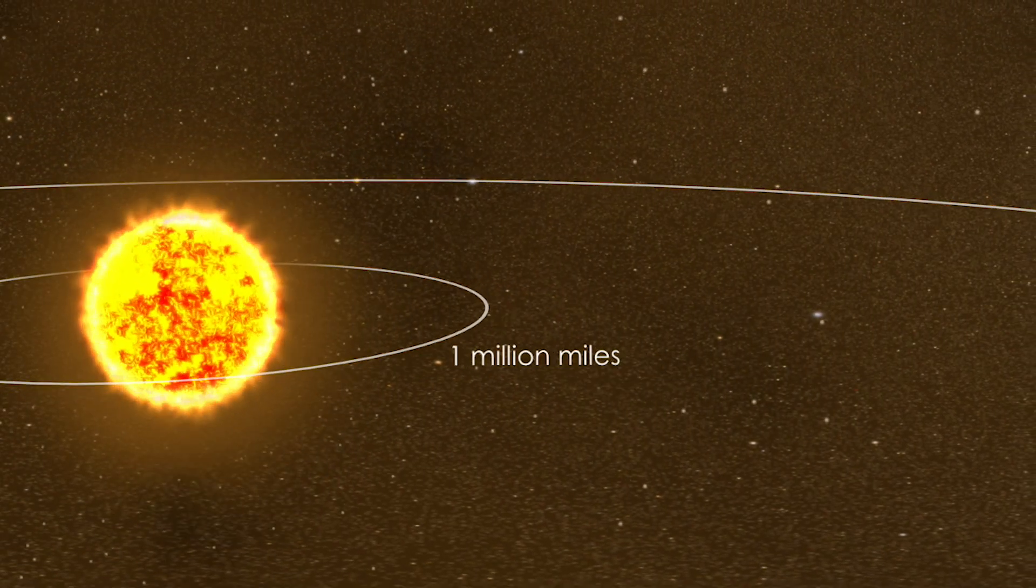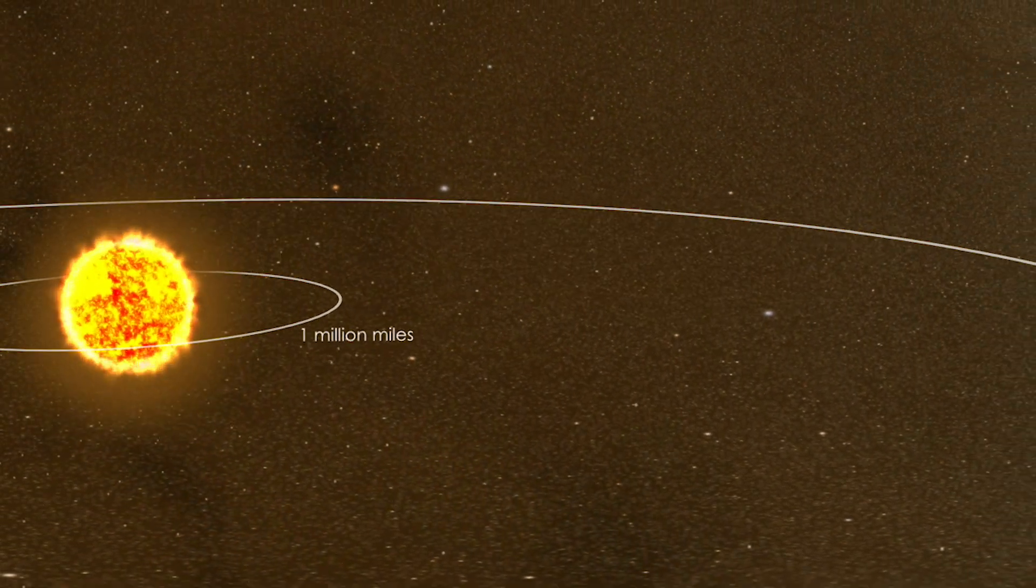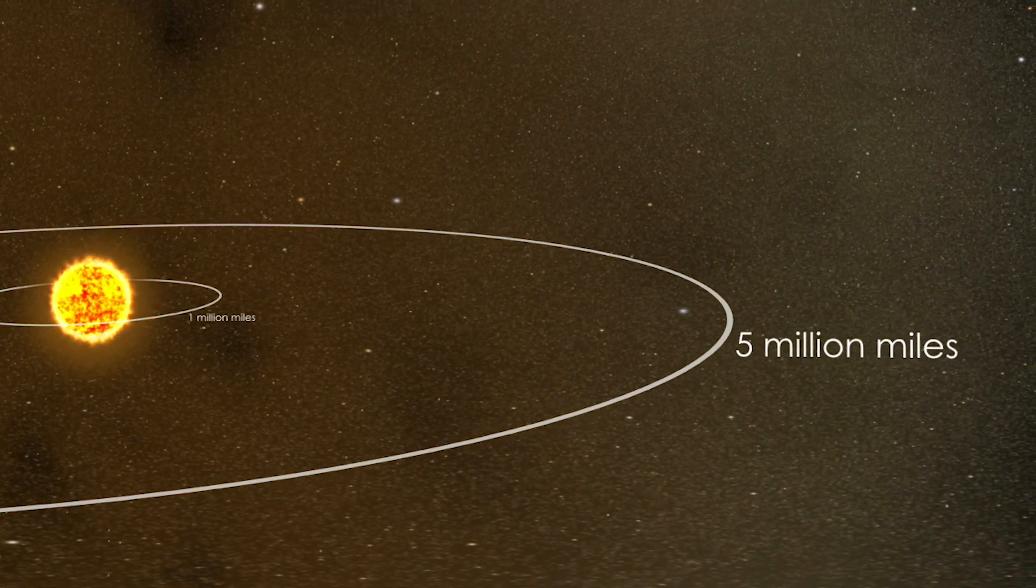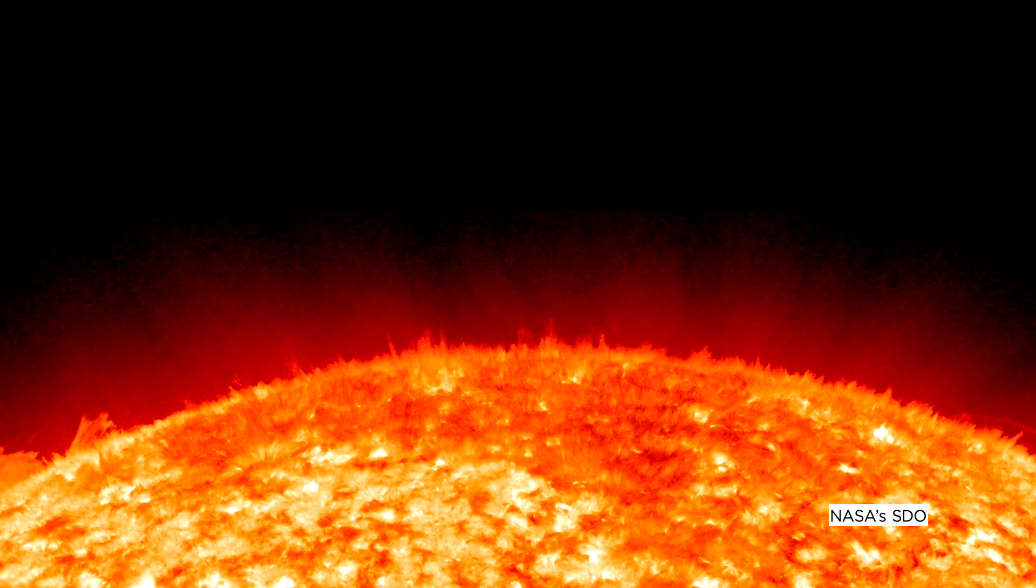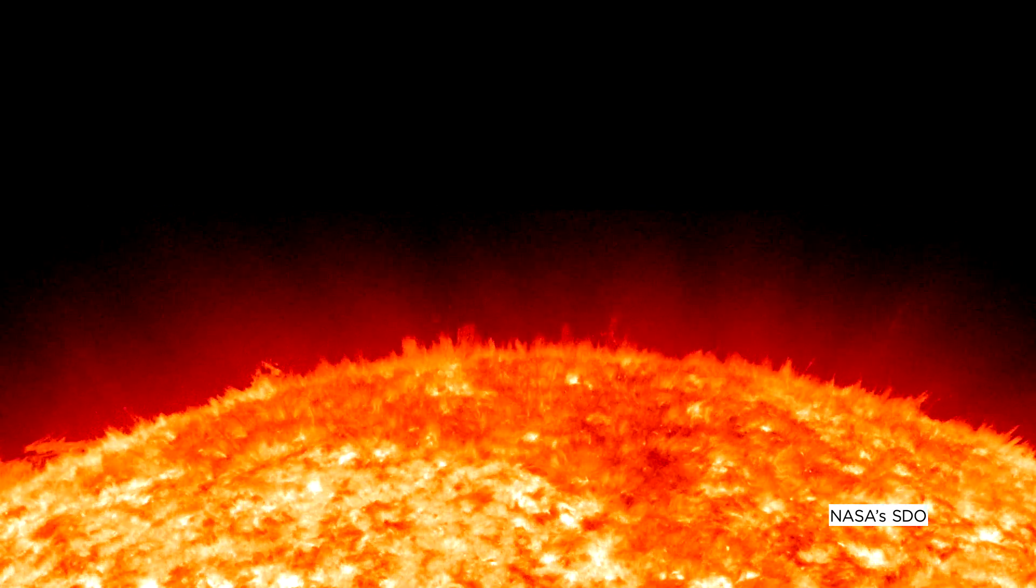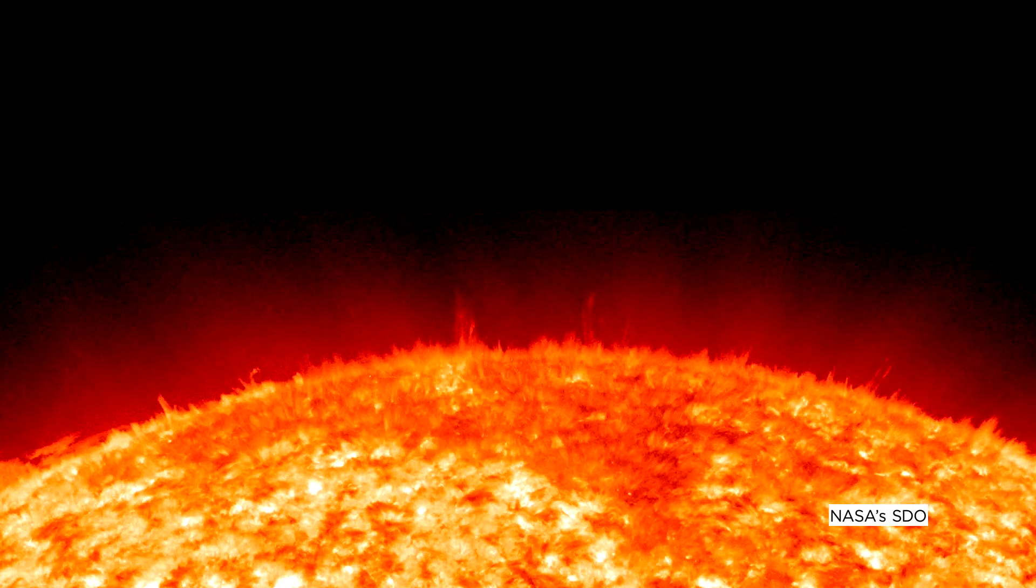The model also shows this whiplash process creating strong magnetic waves, which scientists think could participate in heating the sun's atmosphere and propelling the constant outflow of solar material called solar wind. Understanding spicules helps us to understand one of the ways that energy moves throughout our entire solar system.